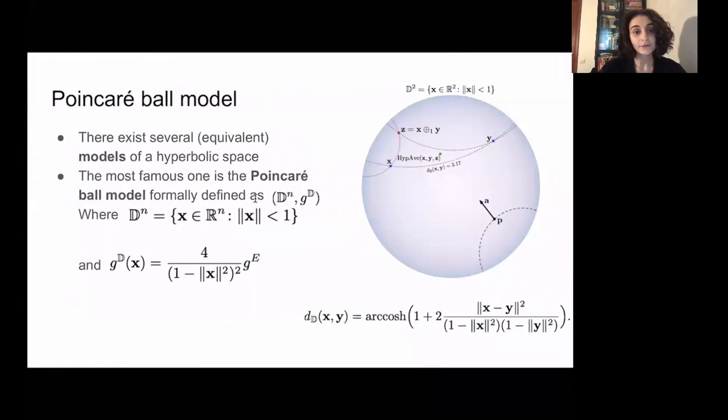There are several equivalent models to describe hyperbolic space and in our work we choose one of the most popular models which is Poincaré Ball model. Formally it is defined as a pair of a unit ball and the corresponding metric tensor. On the picture on the right you can see the visualization of this model and the schematic representation of points and lines in Poincaré Ball model.